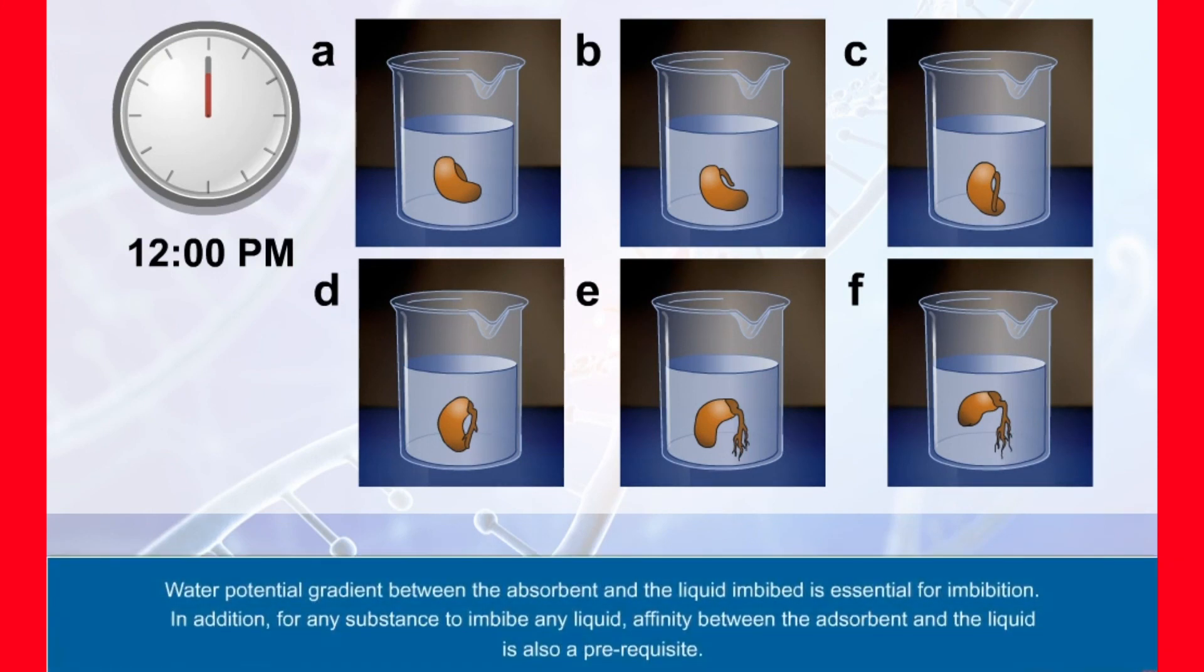Water potential gradient between the absorbent and the liquid imbibed is essential for imbibition. In addition, for any substance to imbibe any liquid, affinity between the absorbent and the liquid is also a prerequisite.